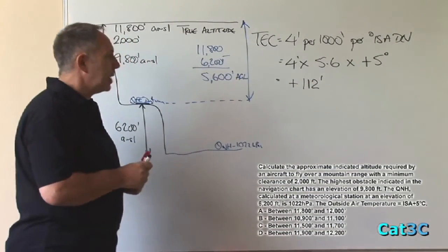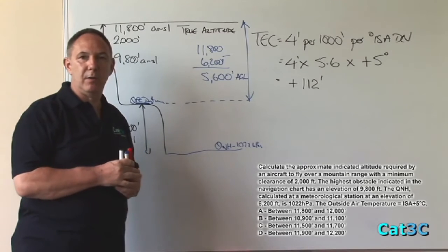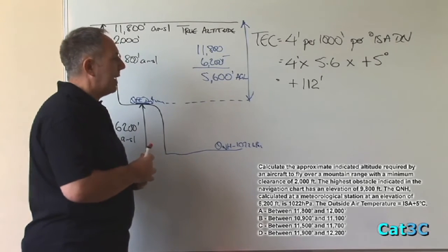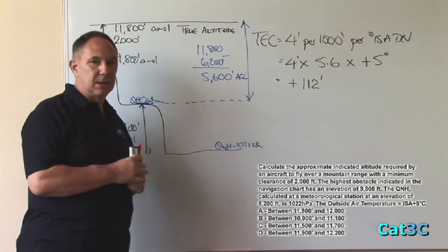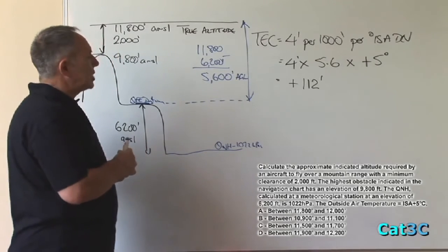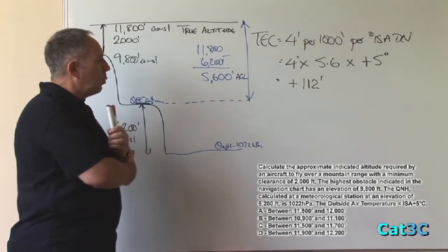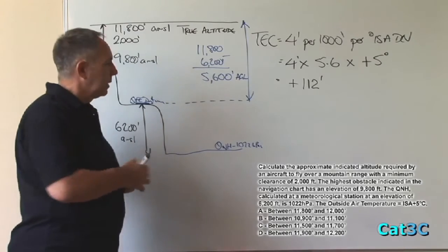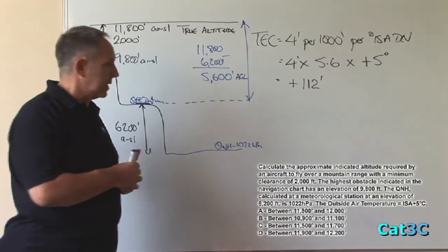So the temperature error would be 112 feet. It's a positive error, which means that the altimeter will be actually under-reading what our true altitude is. So to find out what the altimeter is actually reading, we need to apply this very simple formula.